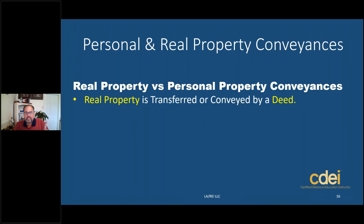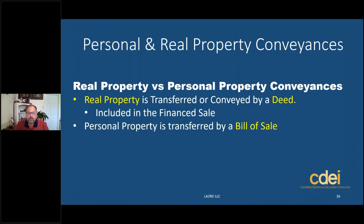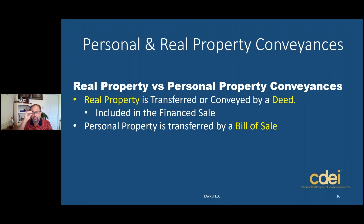Real property is transferred or conveyed by a deed because that's what's going to be financed — it's included in a financed sale. Personal property — and you need to know this for the state exam — is transferred through a bill of sale. When you go under contract for a house as a buyer, you and the seller may agree to include a washer and dryer, a refrigerator, or a pool table. Whatever personal property you agree to purchase is going to be a separate bill of sale, aside from the deed. A bill of sale is what's used to transfer personal property in a transaction.